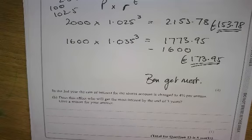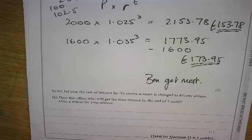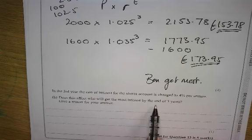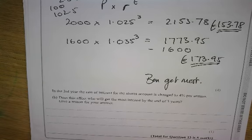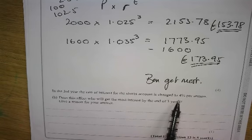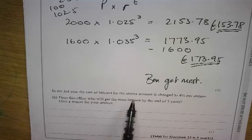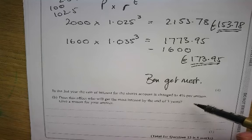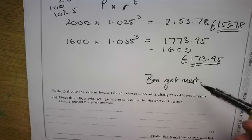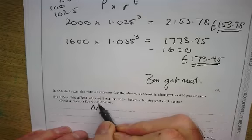Now you're right. Ben gets the most. Then it says, in the third year, the rate of interest for the shares account is changed to 4%. Does this affect who will get the most interest at the end of three years? So in the third year, the rate, it's only one mark. So you should be able to do this quite easily. The shares account here is 4%. Ben is in the shares account. So no, it won't change who gets the most because Ben's already got the most. So changing it up to 4% won't change it, will it? Because he's already getting the most.